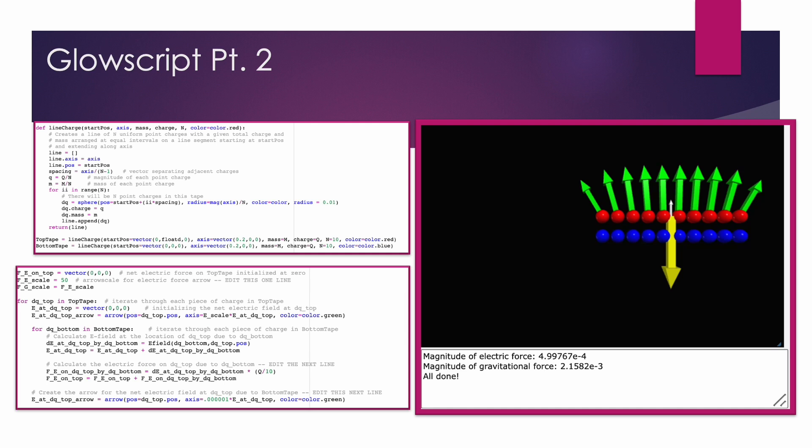To calculate the net electric force exerted on tape B, I first initialized that as a zero vector, and then used a function that calculates the electric field at each of the top 10 points, using superposition of the 10 bottom points. I also iteratively calculated the electric force at each point on the top tape, adding it to a net total each time, and created a green arrow representing the electric field at each top tape point.